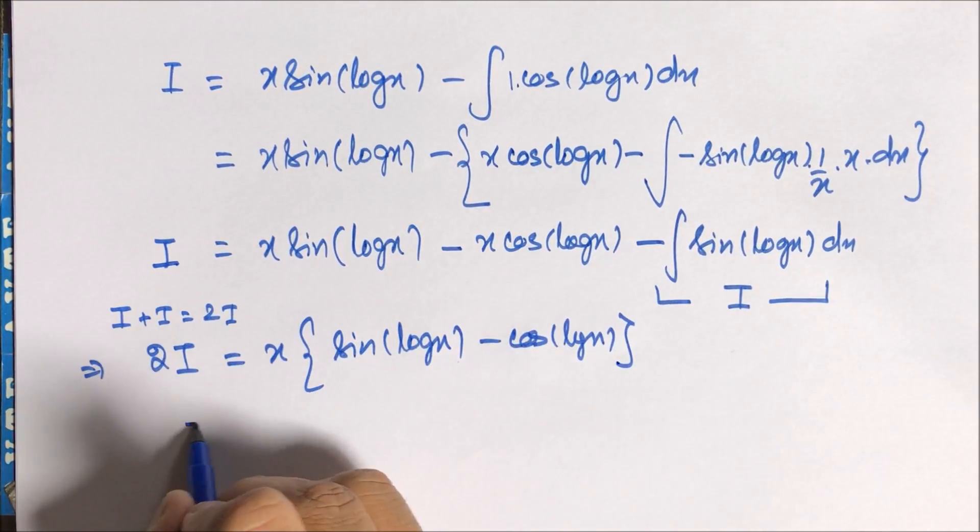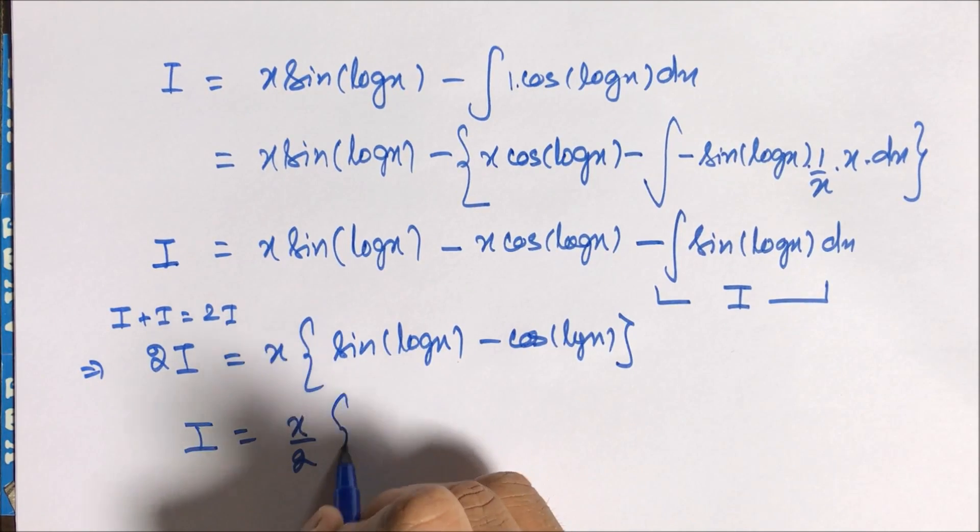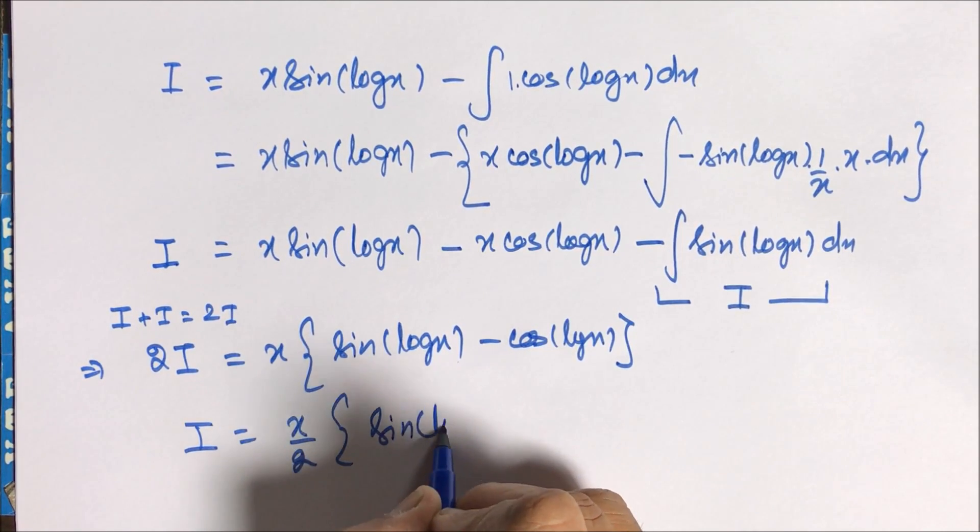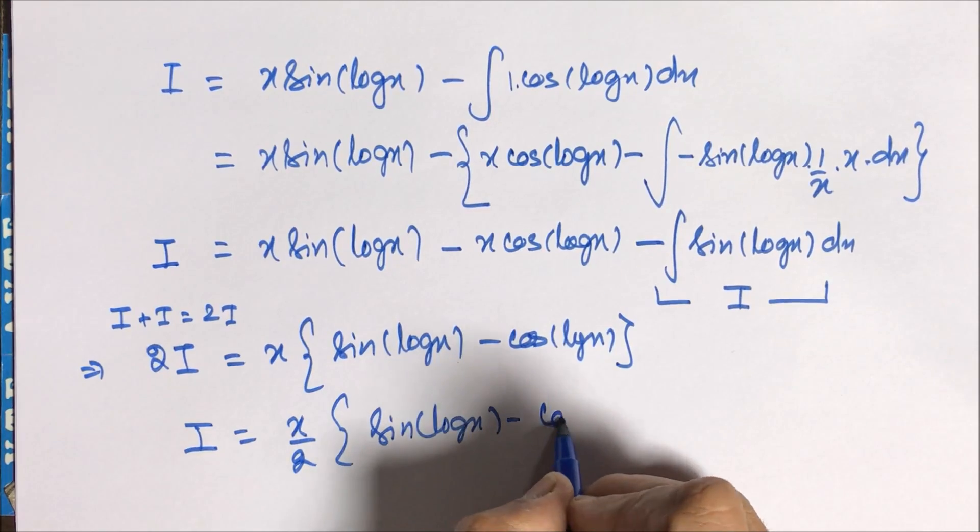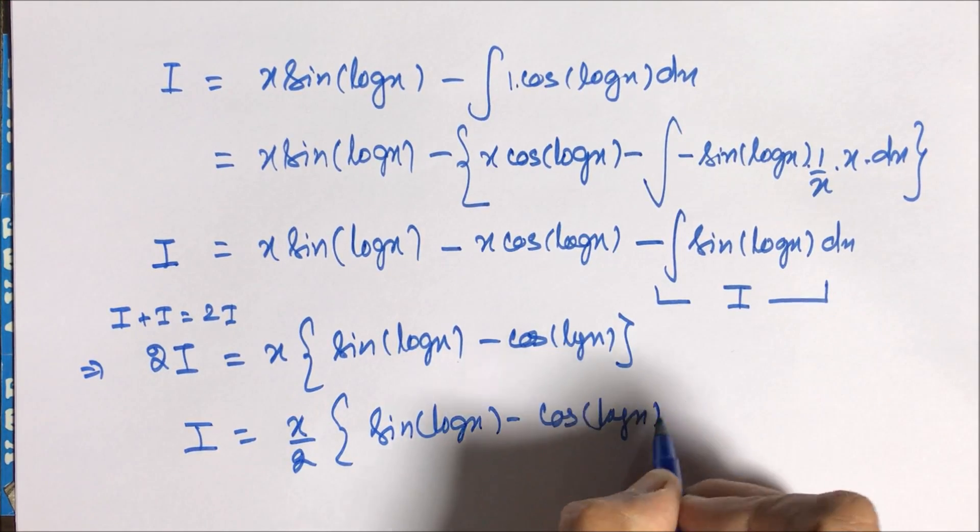So the answer for this question is I equals x/2 [sin(log x) - cos(log x)] plus the integral constant.